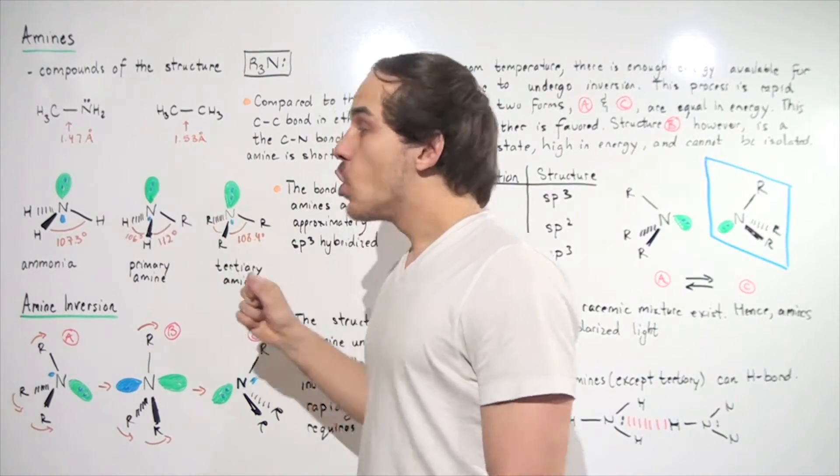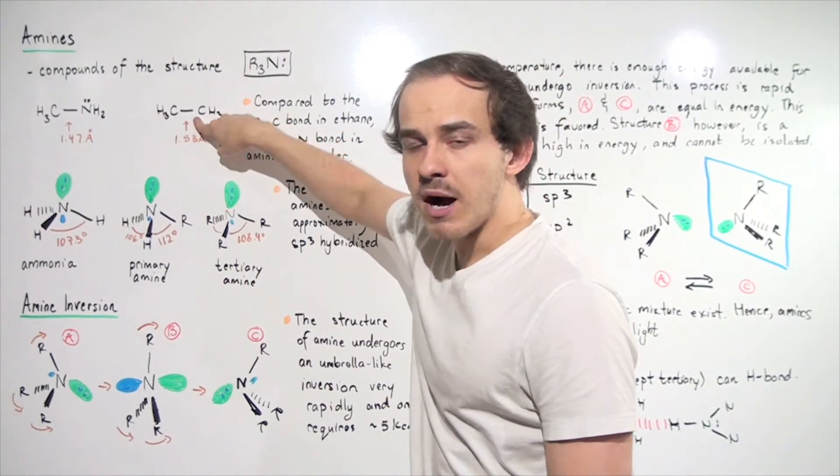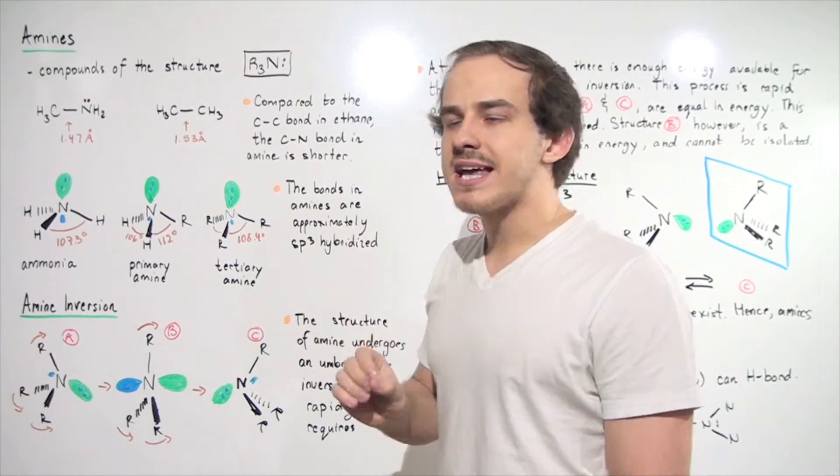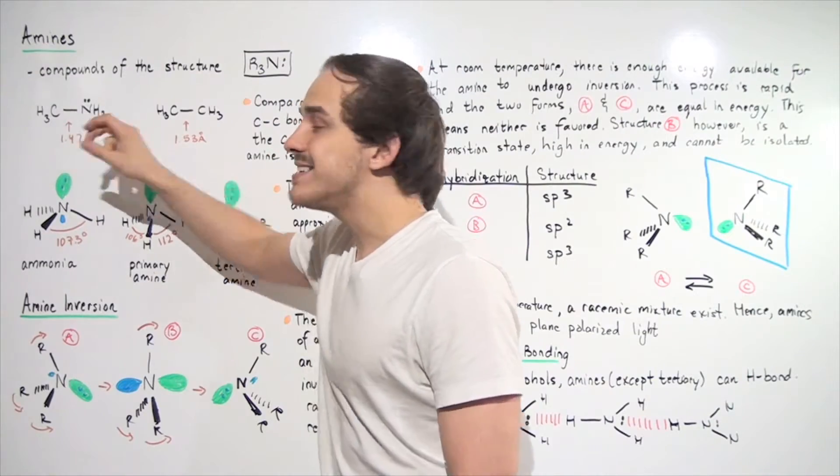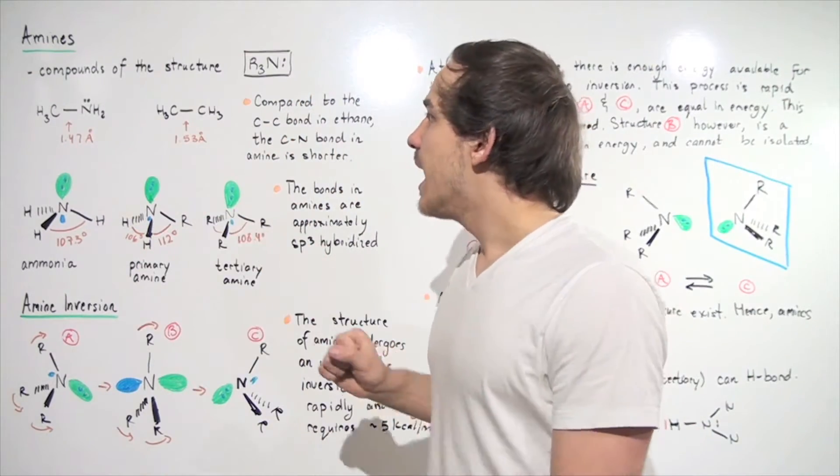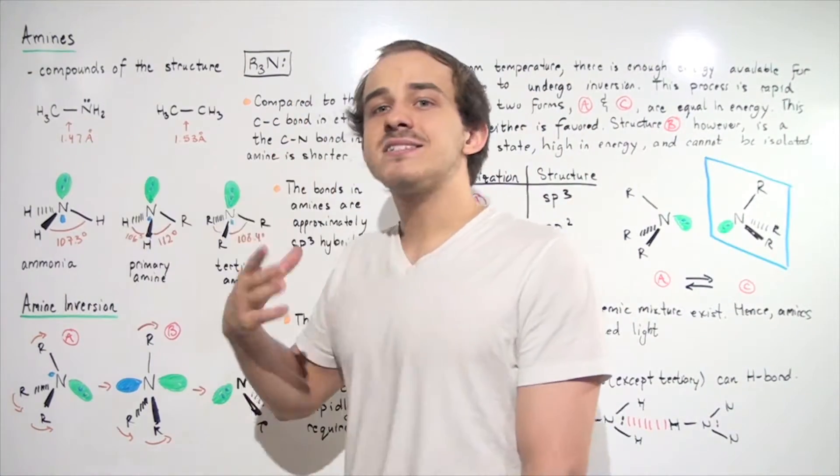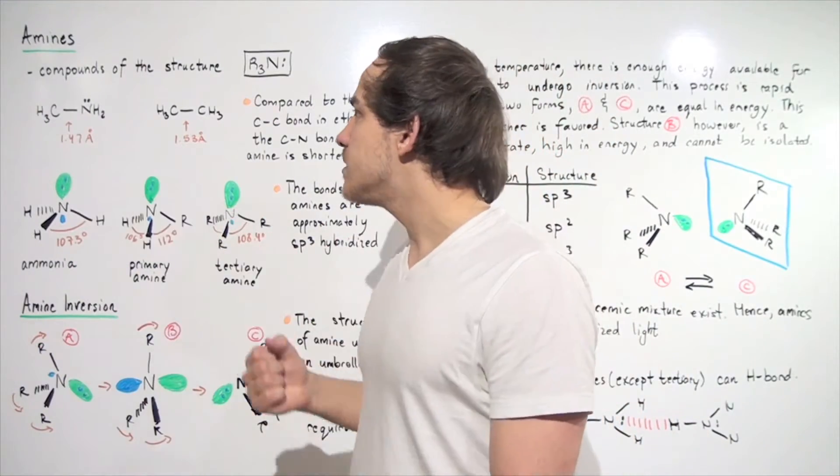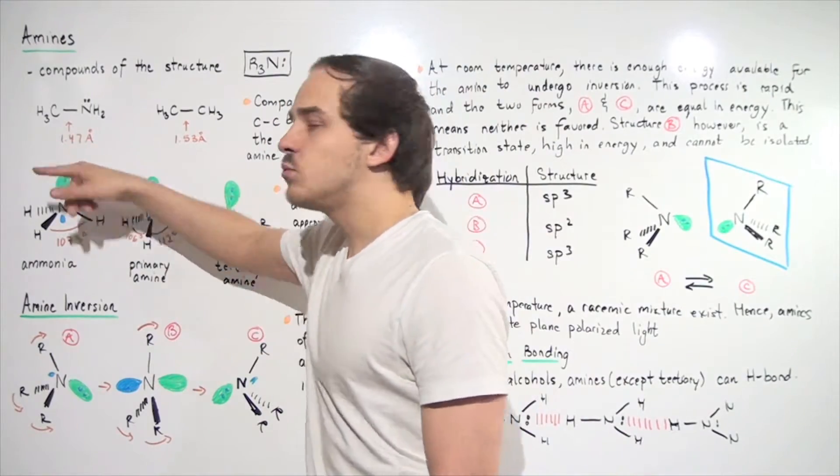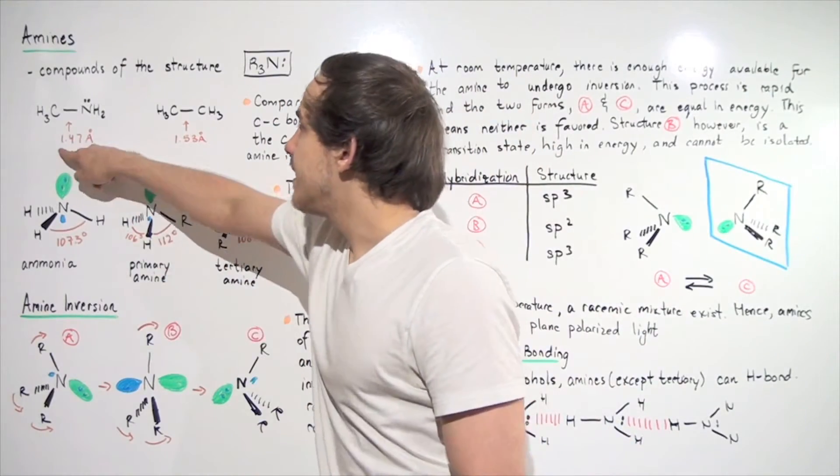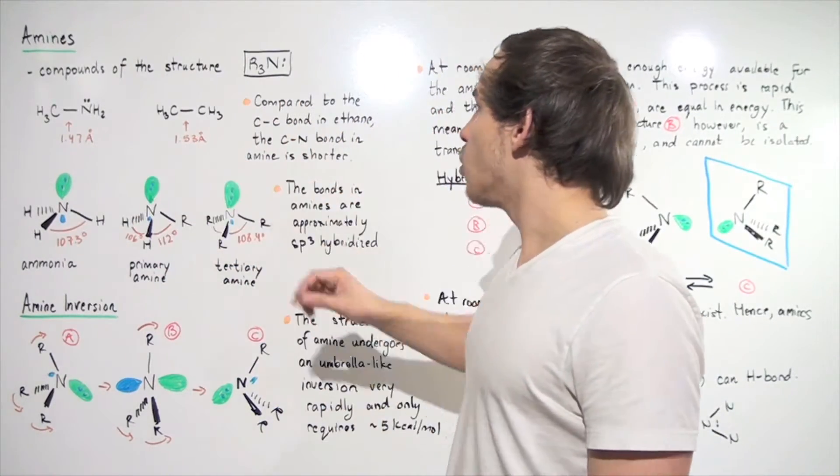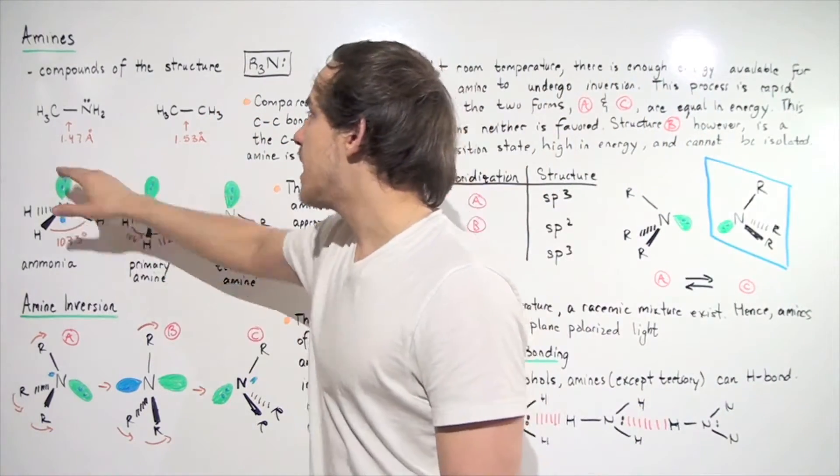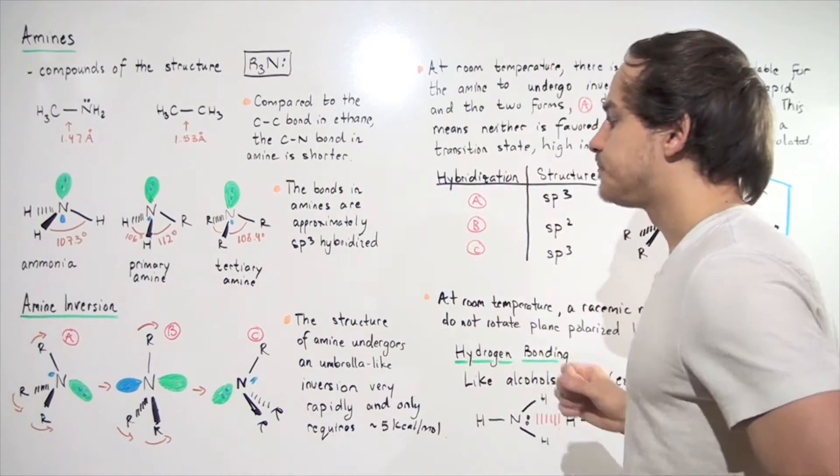Why is there a difference? Well, notice that this covalent bond is non-polar. Both of these carbons have the same exact electronegativity, while this bond is slightly polar covalent. And that means our N is slightly more electronegative, so it pulls electrons more strongly than the carbon does. And that means our bond will shorten. So compared to the carbon-carbon bond in ethane, the carbon-N bond in our primary amine is shorter.